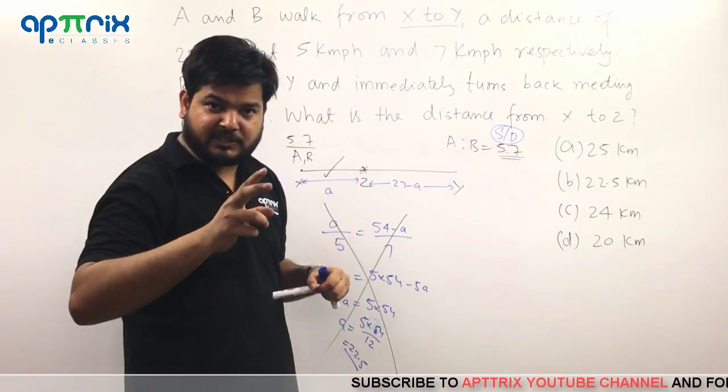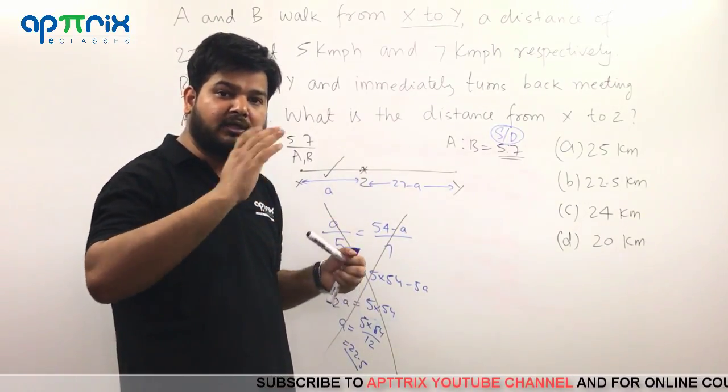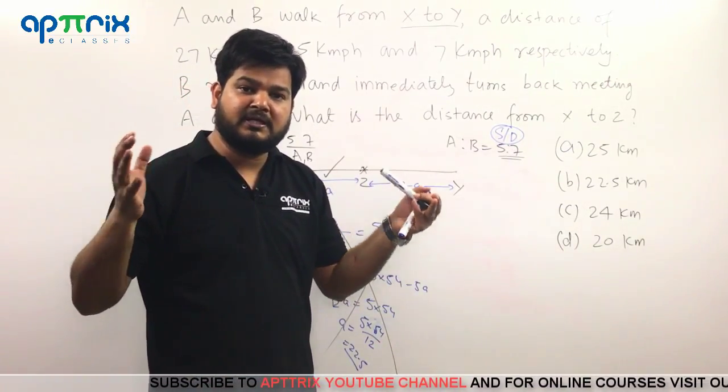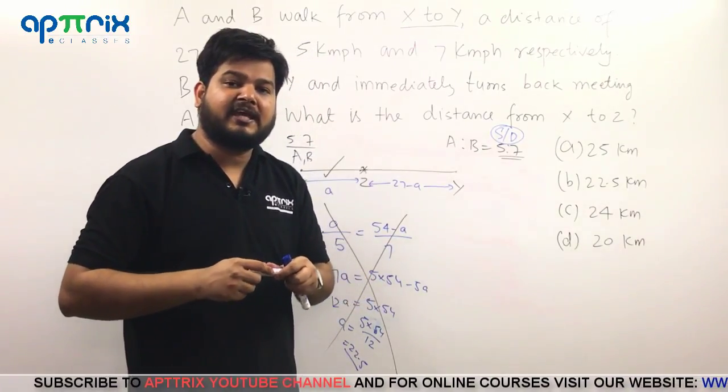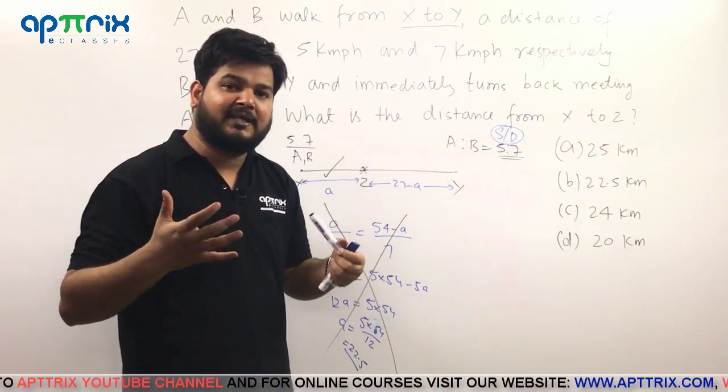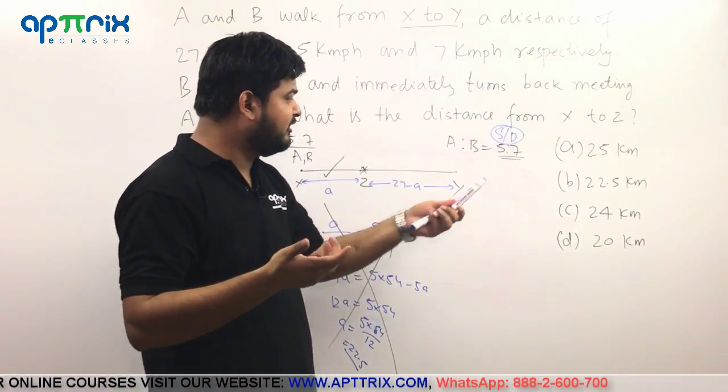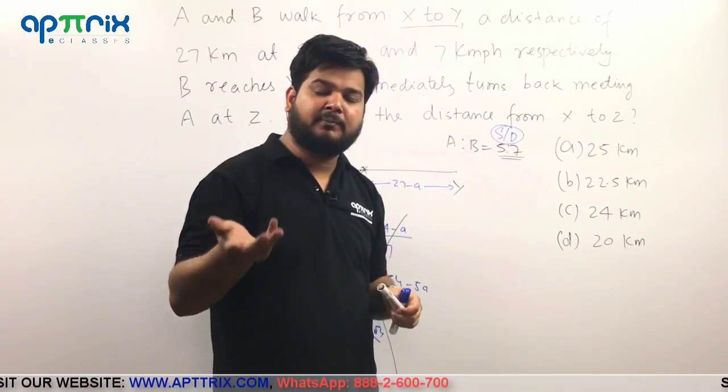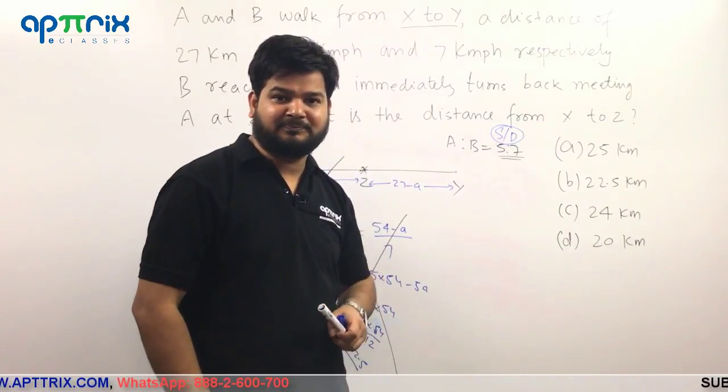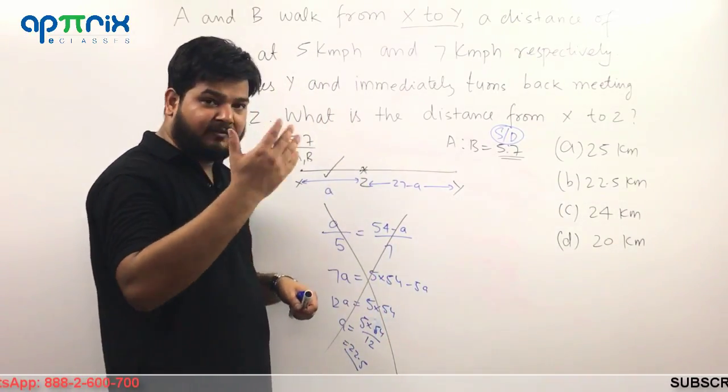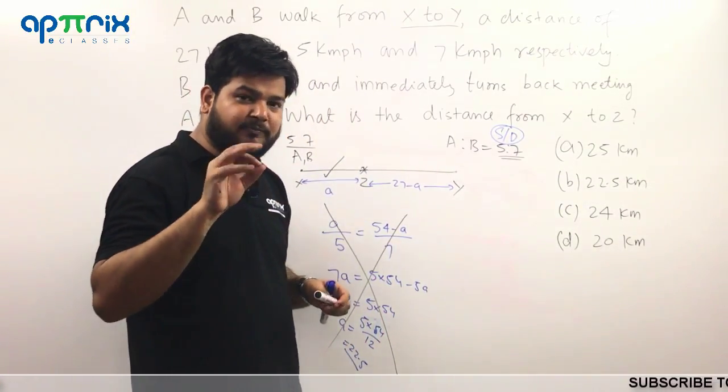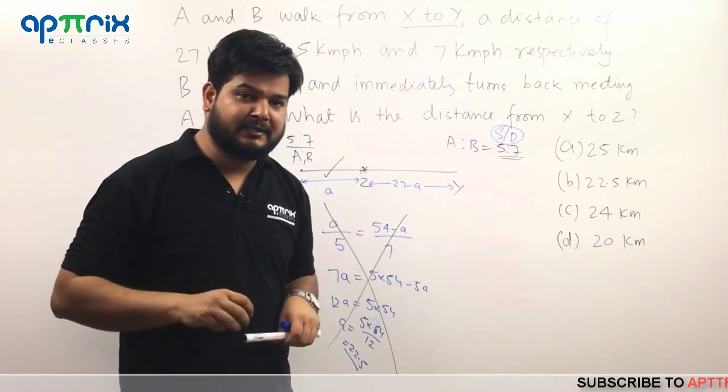We can get it if we have the ratio and we somehow find the total distance traveled by both A and B together. If we can get the total distance covered by A and B together, it won't be difficult for us to find distance traveled by A or B. We can calculate both. It is not going to be any problem. So then you have to think in that direction. So your thought process then should be that how can I get the total distance?